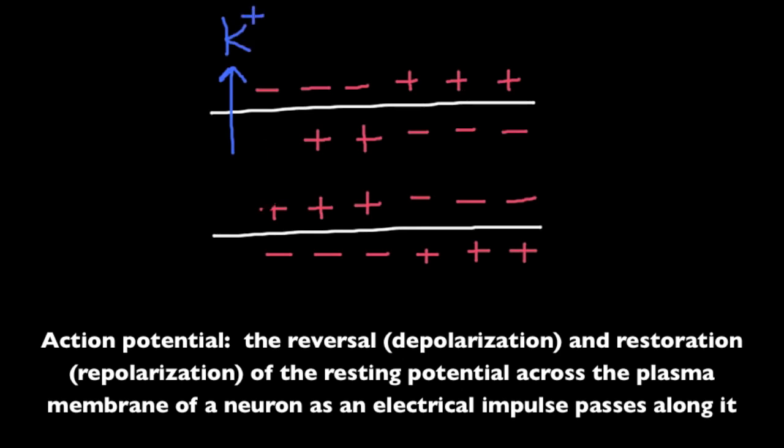Here you see the restoration or repolarization of the resting potential across the plasma membrane. This is as a result of potassium ions moving outside of the membrane through potassium protein channels.